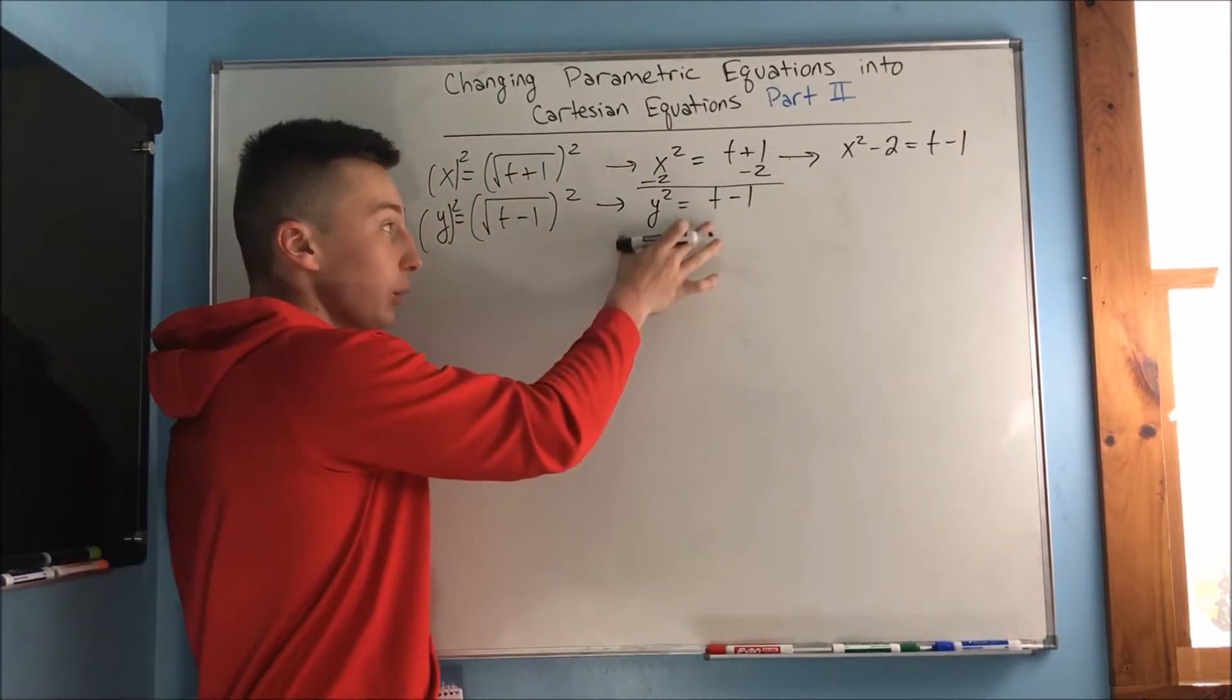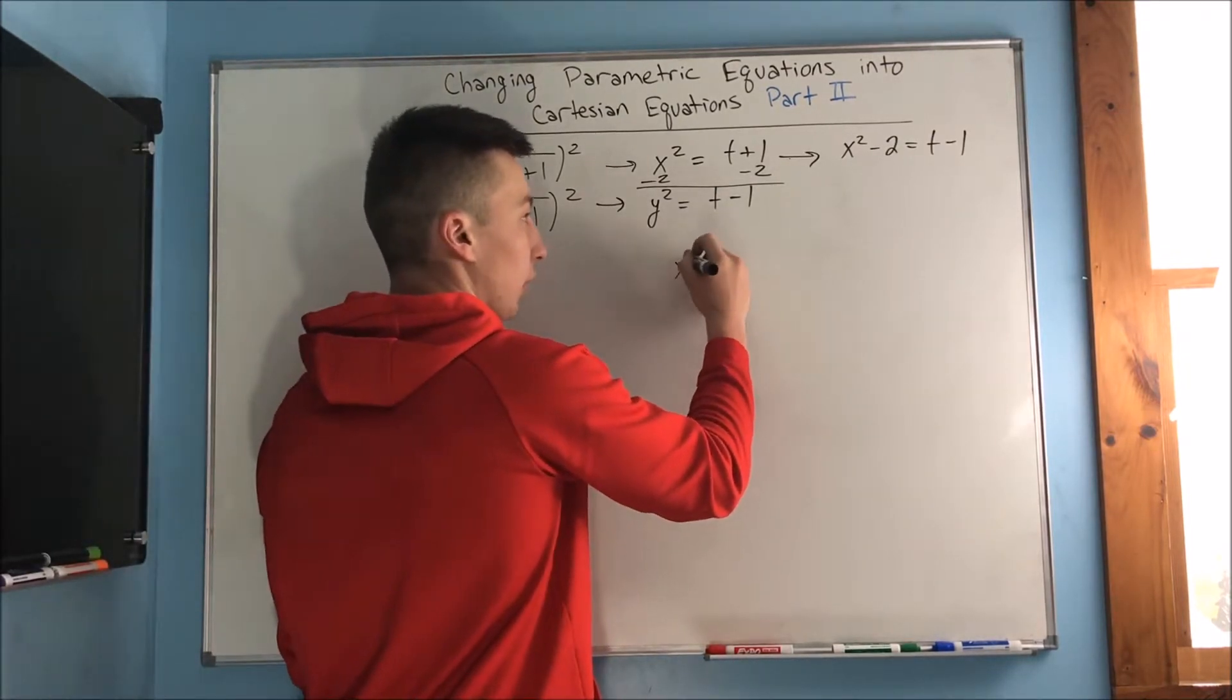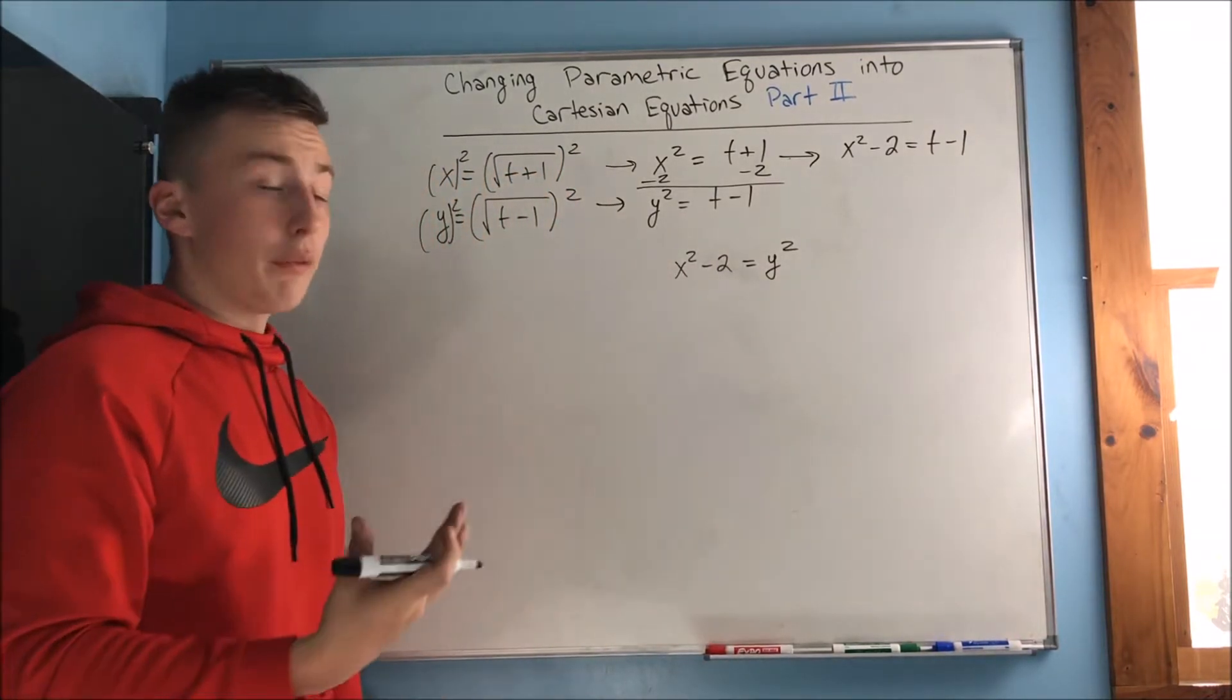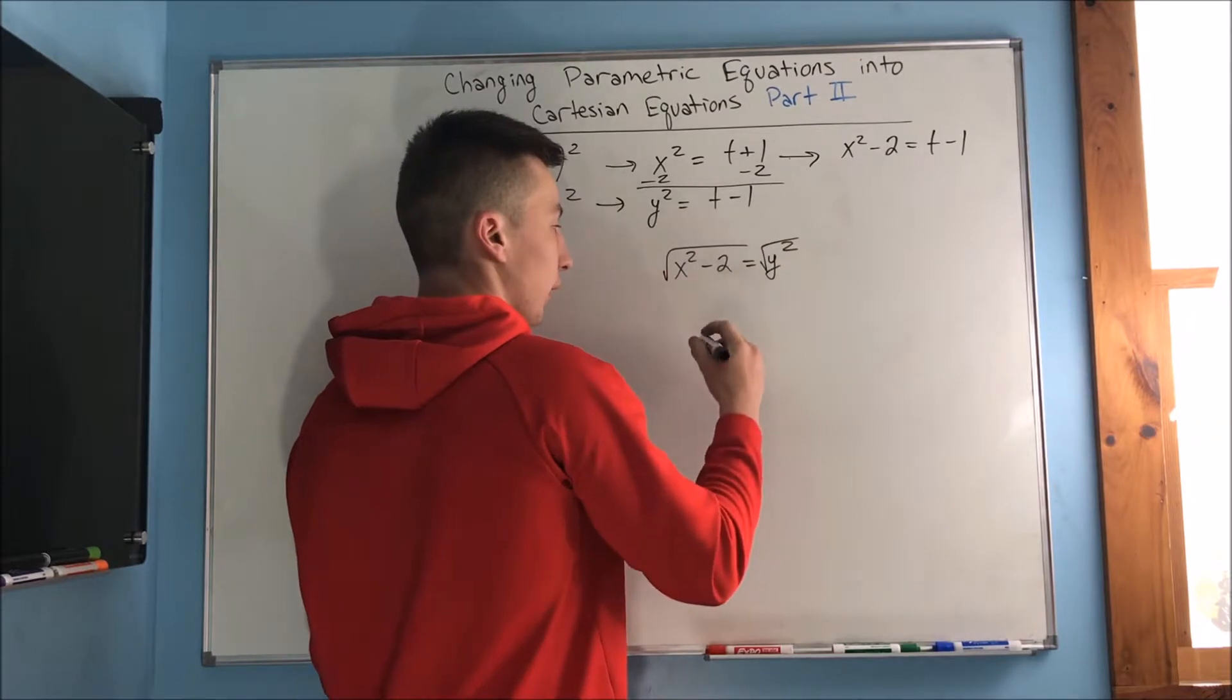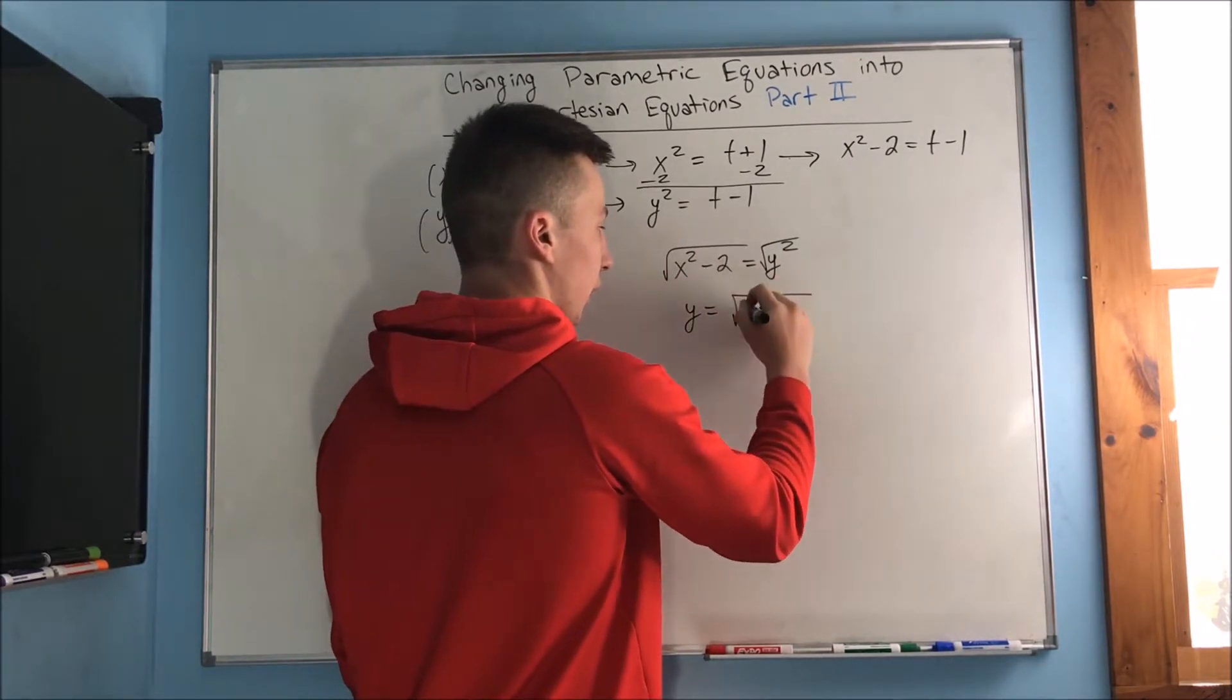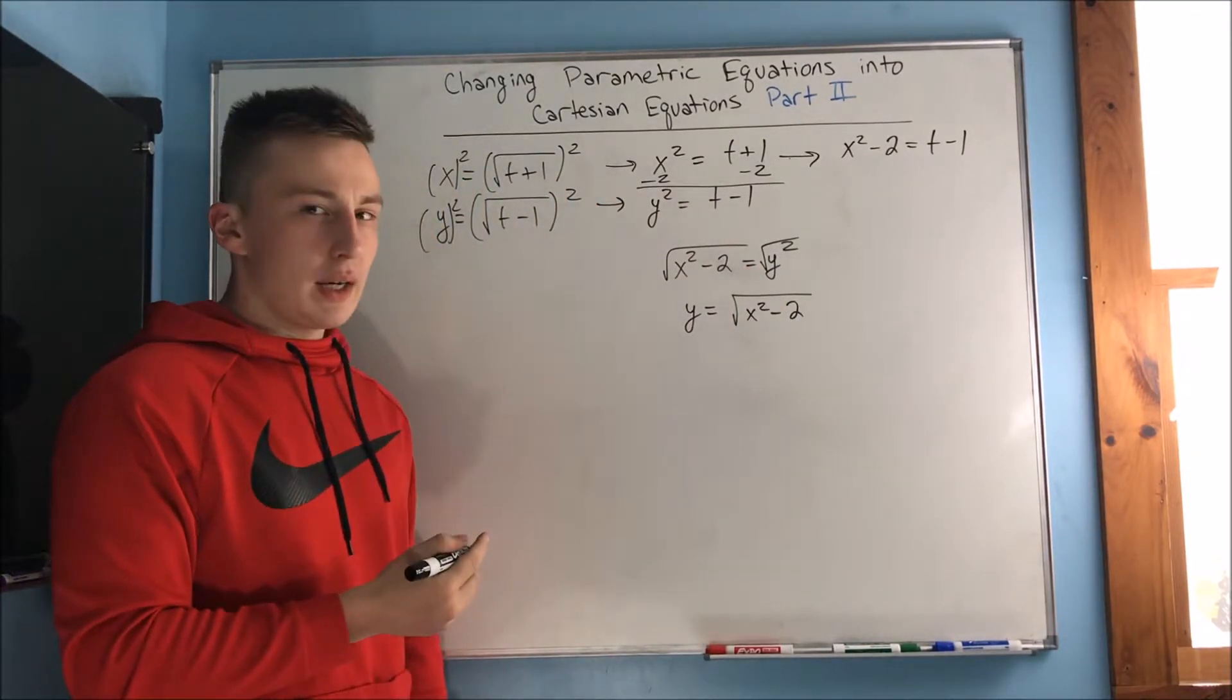Now since y squared also equals t minus 1, we can say that x squared minus 2 equals y squared. Of course, solving for y here, just take the square root of both sides. So y equals the square root of x squared minus 2. But why didn't I include a plus or minus for this?